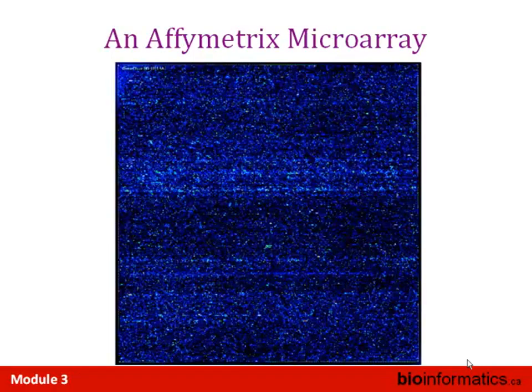Looking at this array image more closely — along the edge there are little dots, which are called fiducial lights. They allow you to accurately software-grid and align the array itself. You can also see 'GeneChip HGU133A' written there — that's not added digitally; they actually make some of their control probes form the label for the type of array. If you don't know what version of the array you're working with, you can look at that.